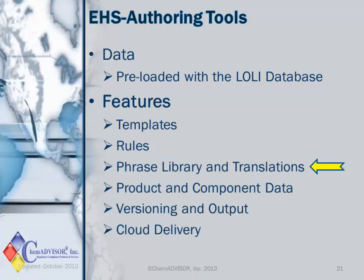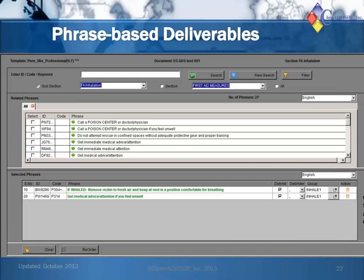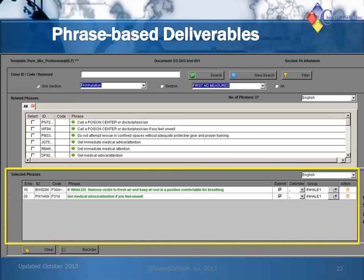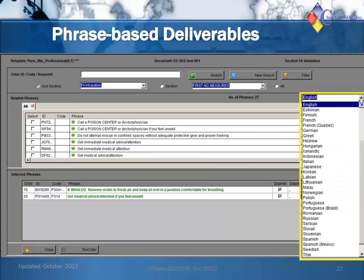And now let's move to the phrase library and translations. EHSAT comes with an English phrase library. The phrases can be used, applied, or corrected across multiple SDSs. Phrases are organized by section and subsection to help you efficiently select phrases. You can search by keyword, and then selected phrases will appear in the bottom grid as you select them. Company-specific or product-specific phrases can also be added. Right now, as you see, our user interface is in English, and all the phrases are from the English phrase library, shown at the top half of the screen. If you have them available, you can select other languages or phrases in other languages from the phrase library to your right.